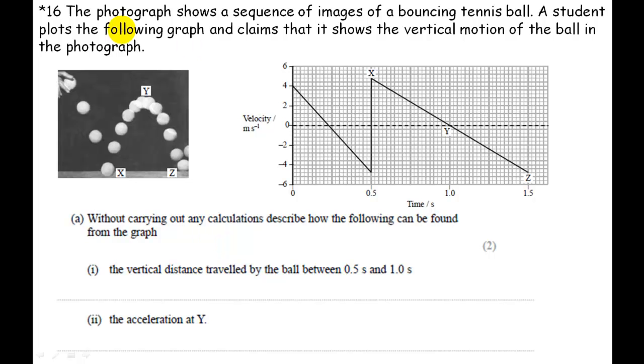It says the photograph shows a sequence of images of a bouncing tennis ball. A student plots the following graph and claims that it shows the vertical motion of the ball in the photograph. Notice it says claims, sort of a bit dubious. It sounds like the examiner doesn't believe the student's done it correctly.